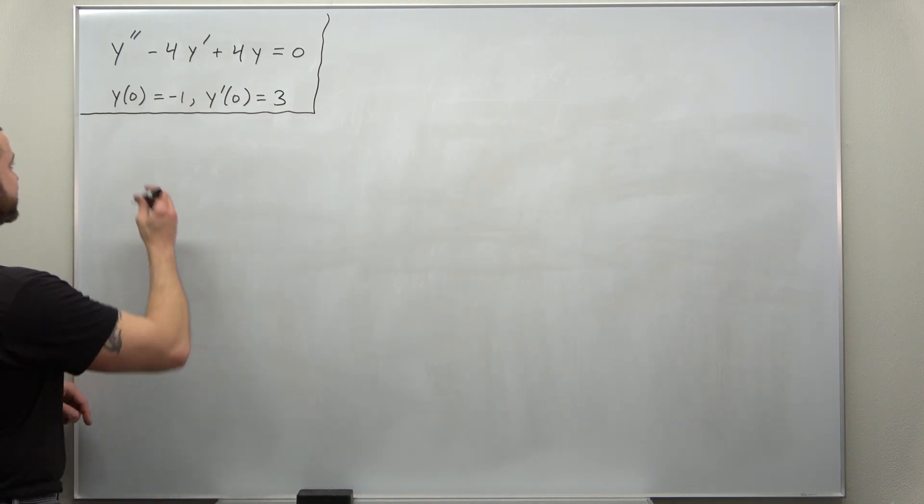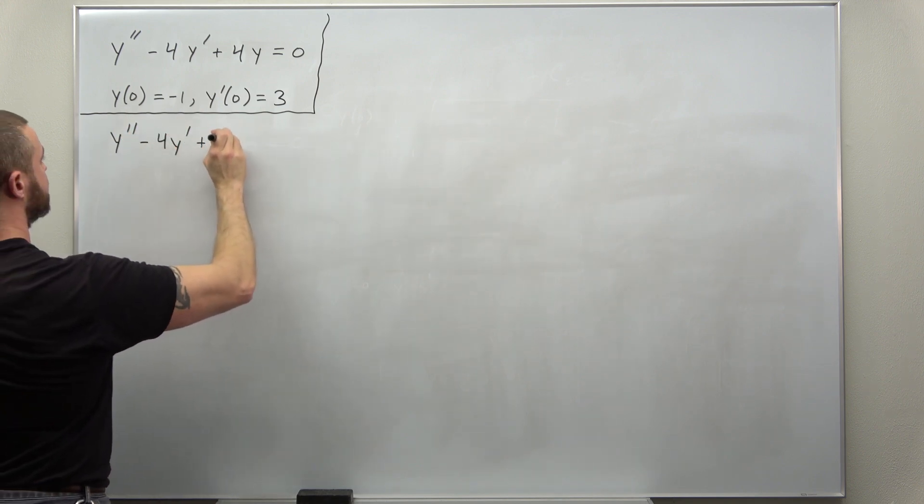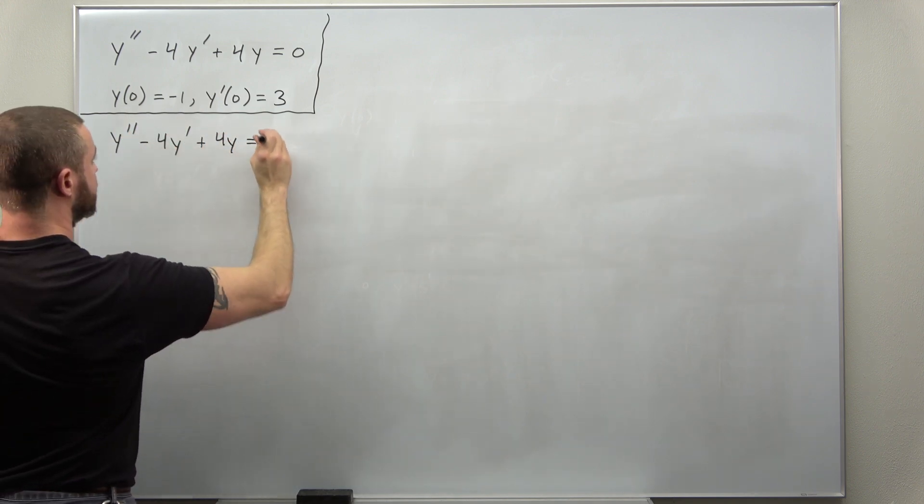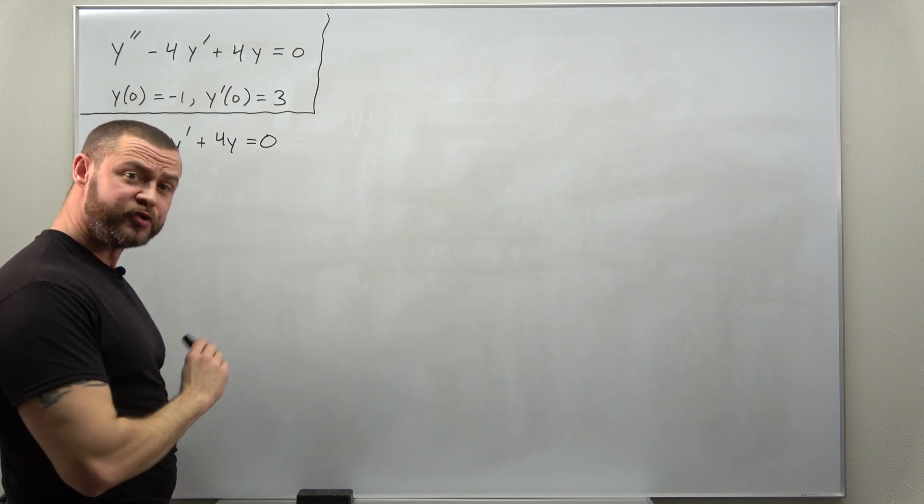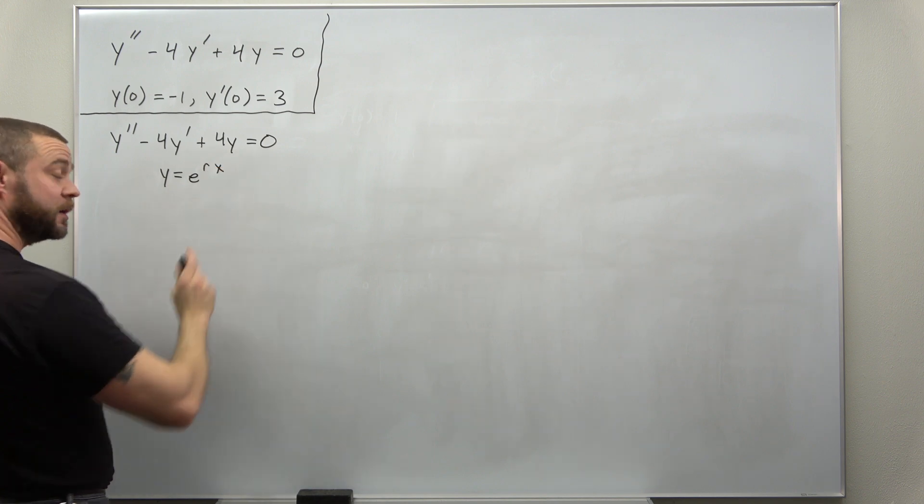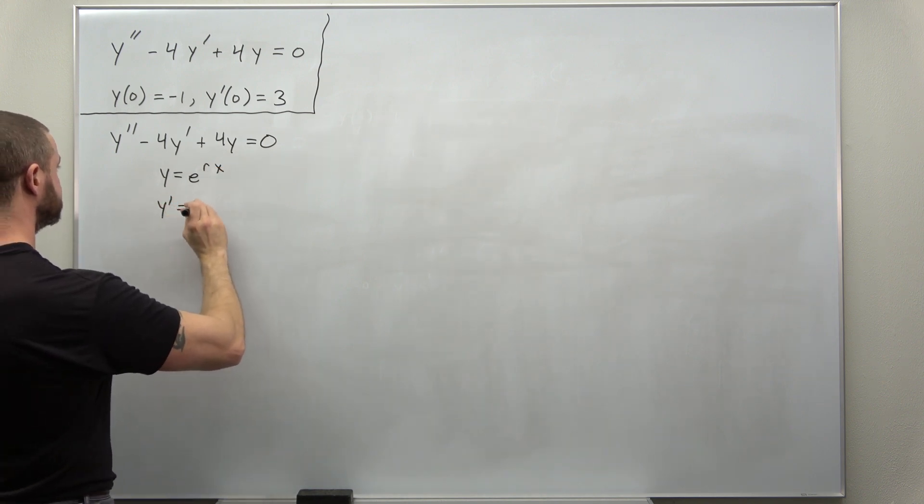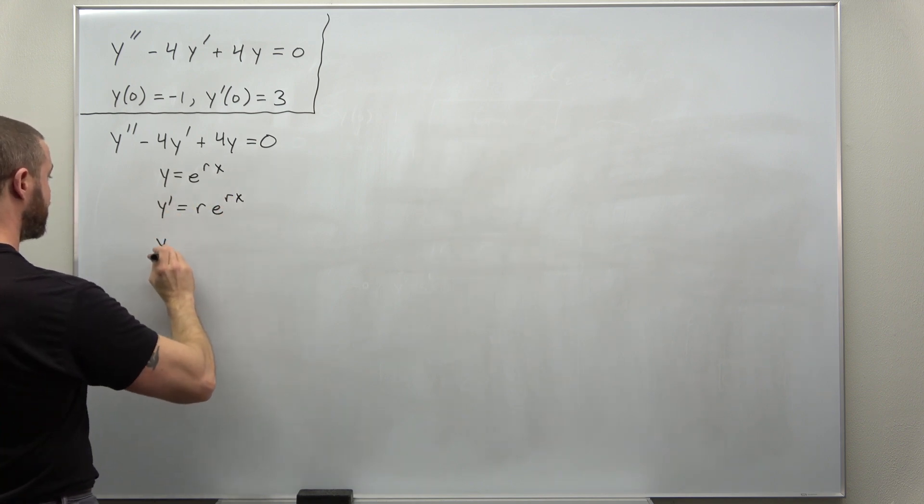So as always start with the ODE and we assume solutions of the form y equals e to the rx. Calculate the first and second derivatives with the chain rule giving you factors of r.